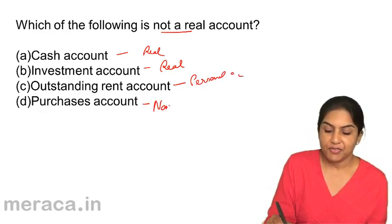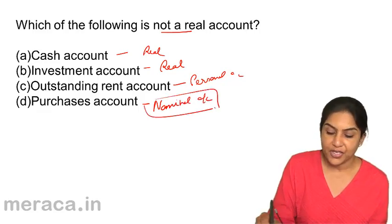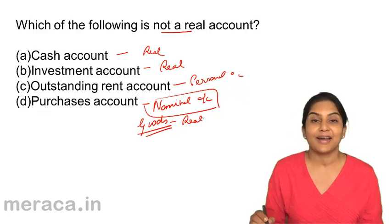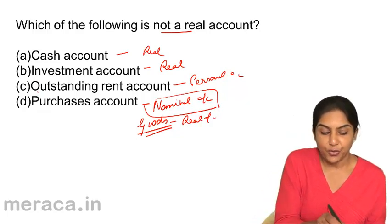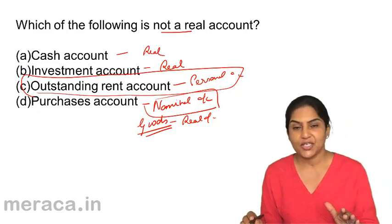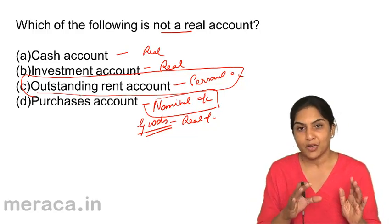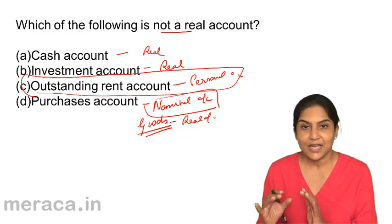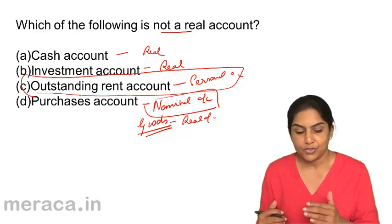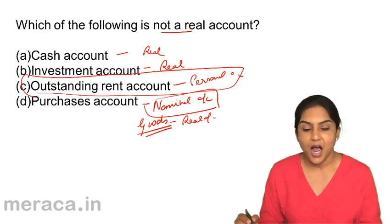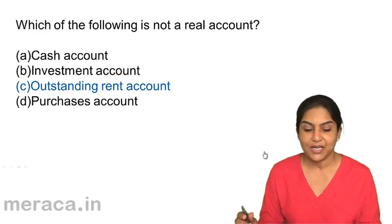Purchases — we have considered it as a nominal account. But there is a school of thought that says purchases is nothing but goods which are purchased, and goods is a real account. So in such a case, where we have an option which is clearly not a real account — like outstanding rent — that would be our correct answer. Purchases is sometimes referred to as a nominal account because it's an expense whose benefit you get in the current year, but sometimes it is also considered a real account because goods come in. Since we have an option which is clearly a personal account, the correct answer is C — outstanding rent account, which is a representative personal account.